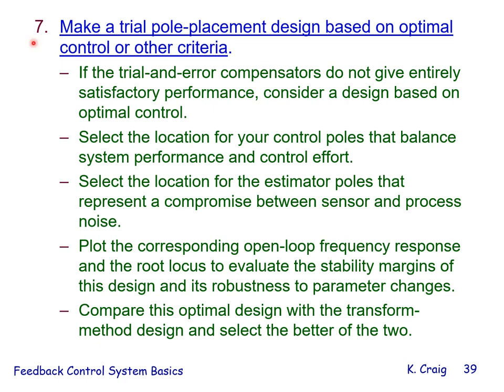Step 7: make a trial pole placement design based on optimal control or other criteria. If trial-and-error compensators do not give entirely satisfactory performance, consider a design based on optimal control. Select the location for control poles that balance system performance and control effort. Select estimator pole locations representing a compromise between sensor and process noise. Plot the corresponding open-loop frequency response and root locus to evaluate stability margins and robustness to parameter changes. Compare this optimal design with the transform method design.